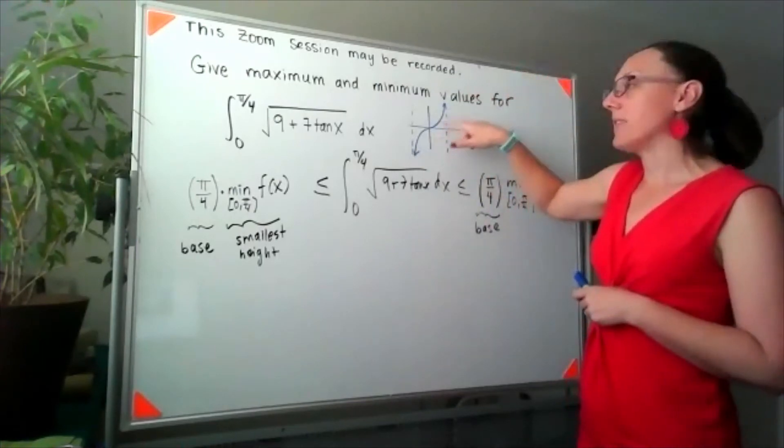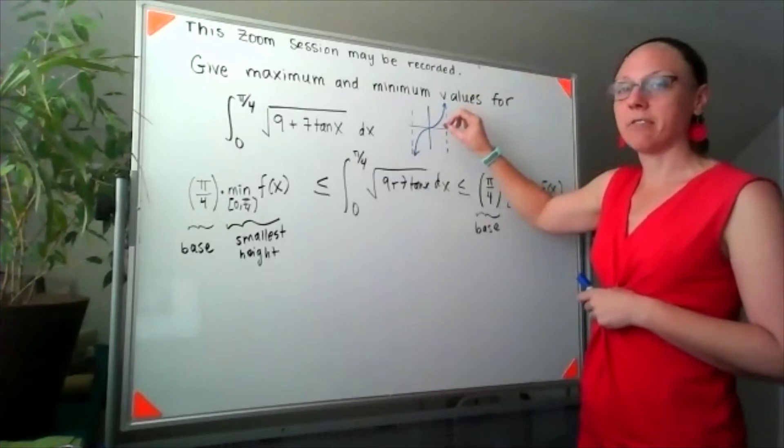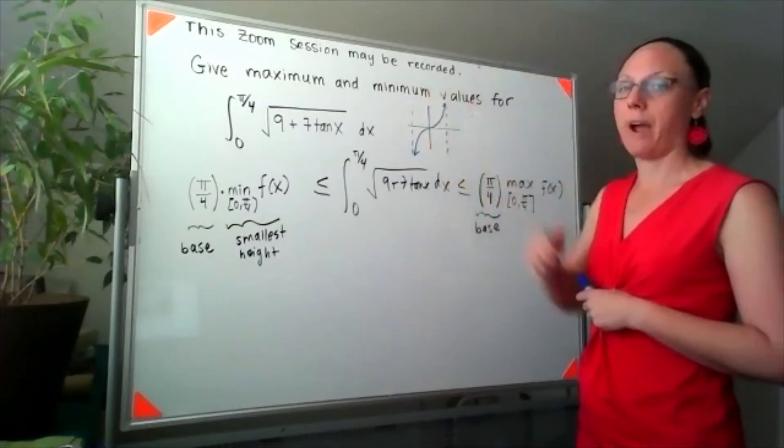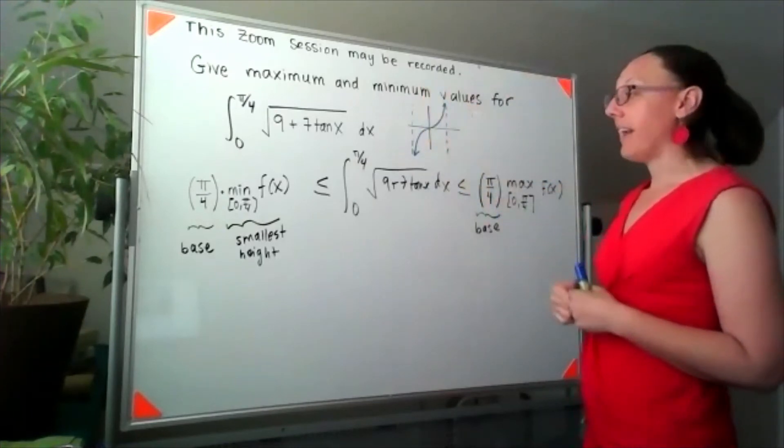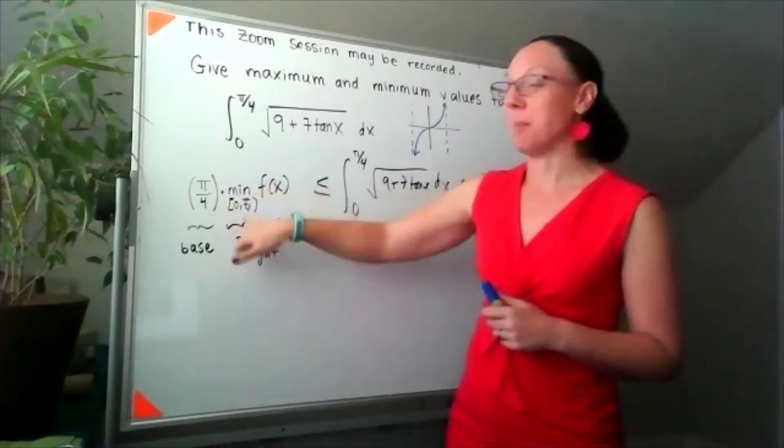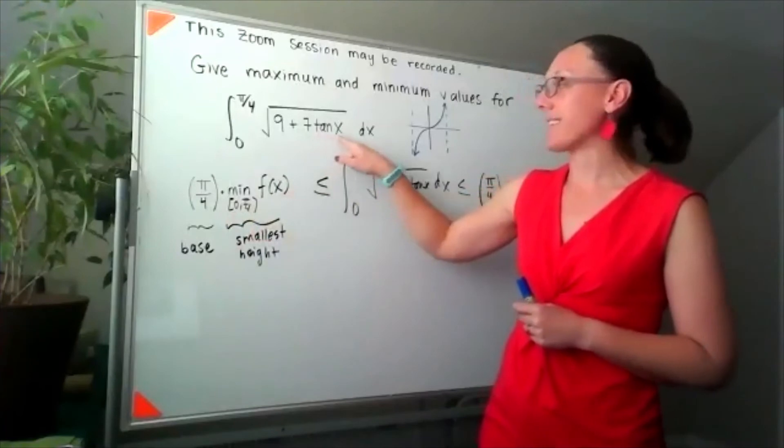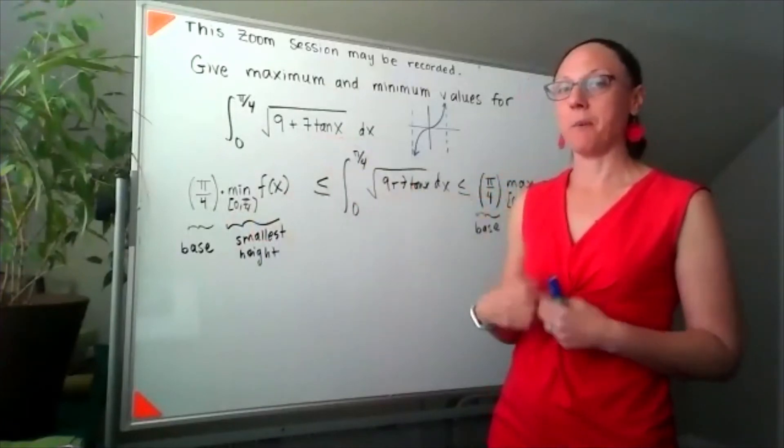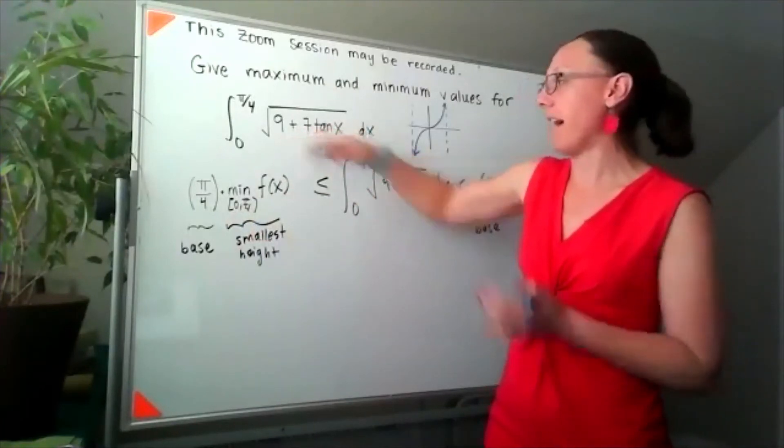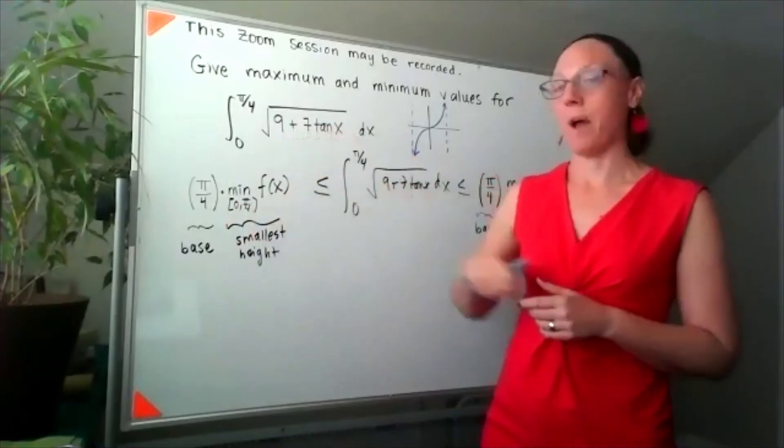Well, this tells me that tangent is an increasing function between zero and pi over two. That in turn tells me that I'm going to find my minimum value of f of x when x is zero, and I'm going to find the maximum value of f of x when x is pi over four.